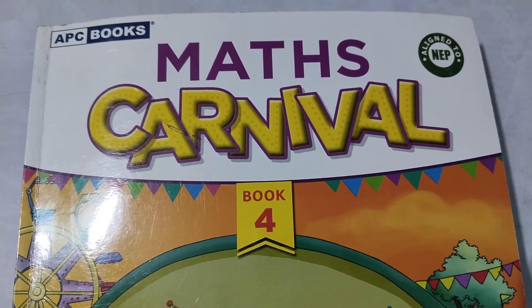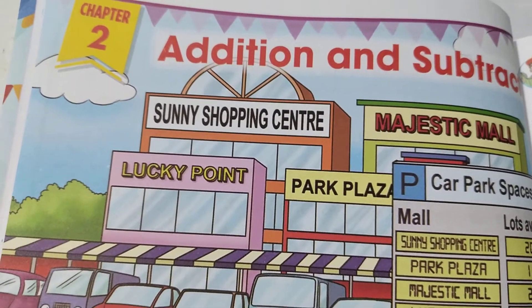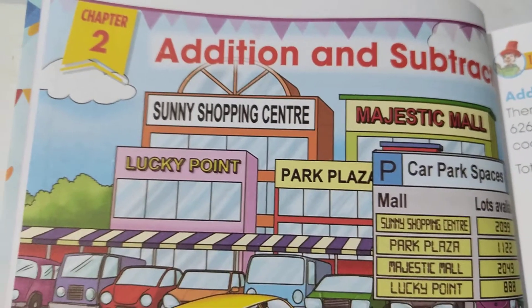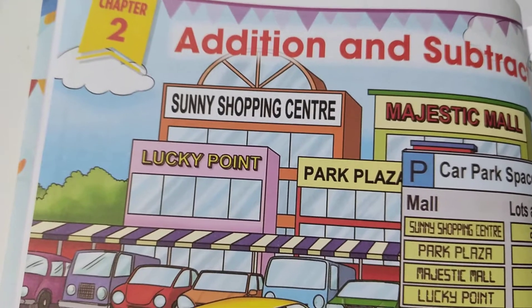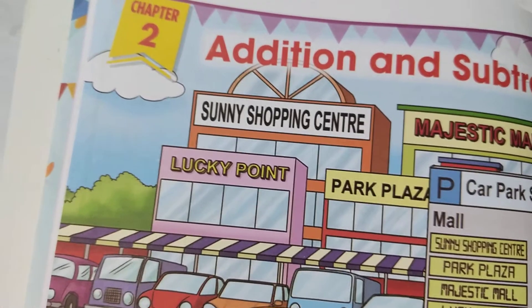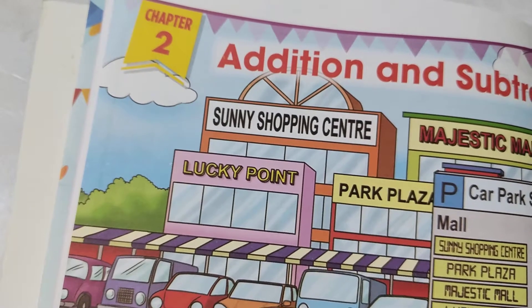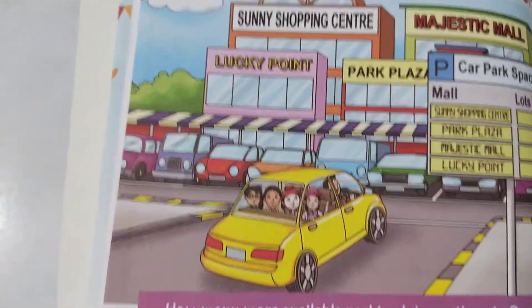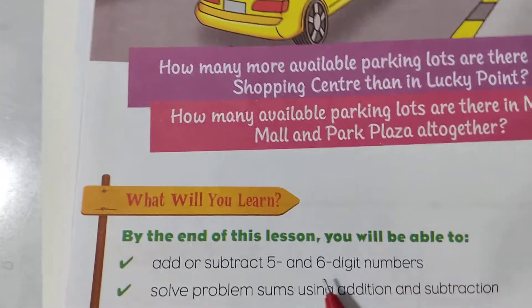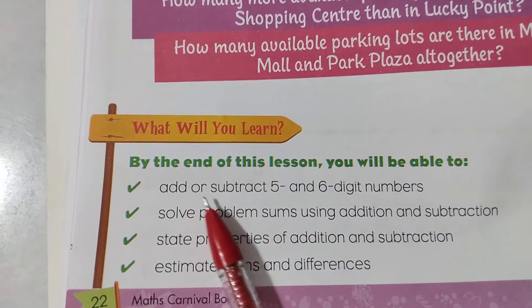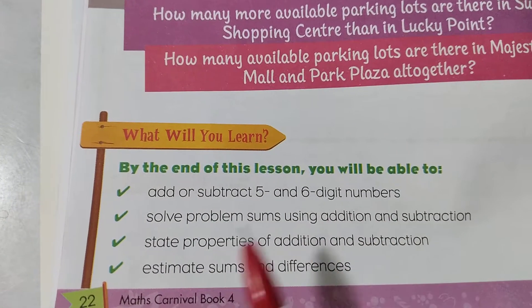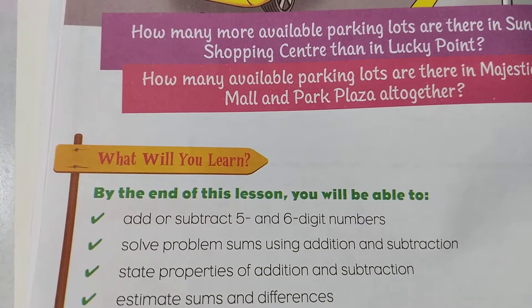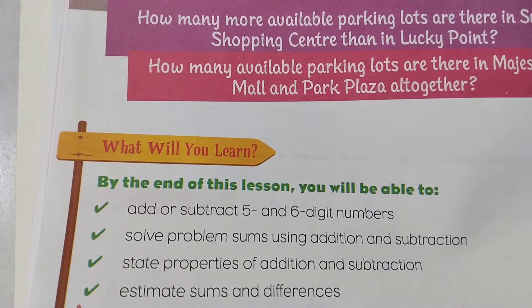So let's open your page number children. Chapter No. 2, Page No. 22, Addition and Subtraction. In our previous Class 3, we have learnt how to add or subtract 2 or more 4-digit numbers. We shall now extend the same idea to add the 4-digit and 5-digit numbers. By the end of this lesson, we will learn how to add or subtract 5 and 6-digit numbers, solve problem sums using addition and subtraction, state properties of addition and subtraction, and estimate sums and differences.